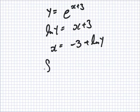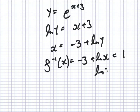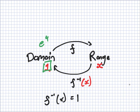Which means the inverse function is minus 3 plus log x, and that's supposed to equal 1 they say. Which means log x is supposed to equal 4, which means x is supposed to equal e to the 4, which is what I thought a moment ago.